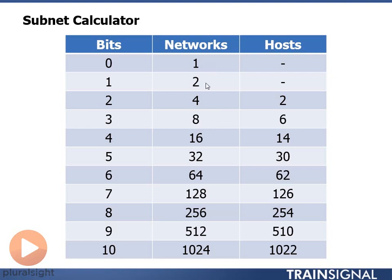So: one times two is two, times two is four, times two is eight, times two is 16, times two is 32, 64, 128, 256, 512, 1024, 2048, 4096, 8192, 16384, and so on.